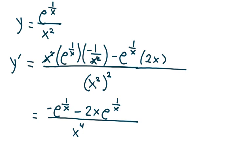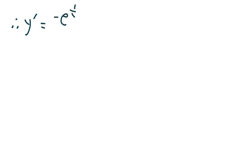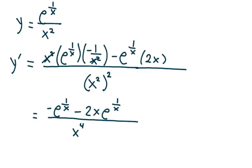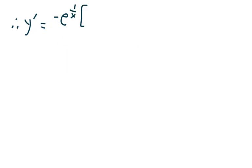I factor out negative e to the 1 over x from the numerator. Therefore y prime equals negative e to the 1 over x times the quantity 1 plus 2x, all divided by x to the 4th. And that's how we do problem 12.